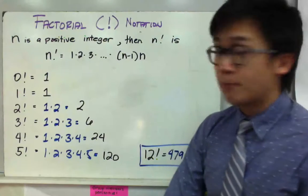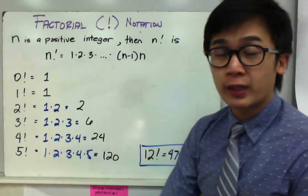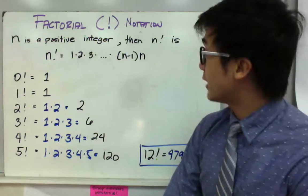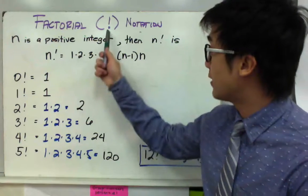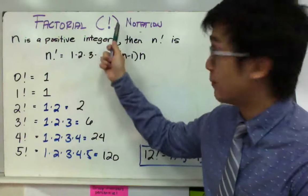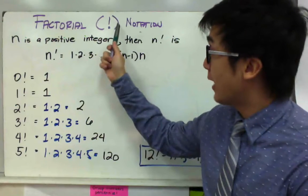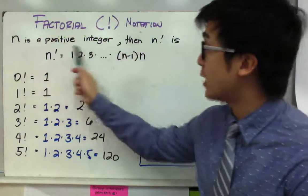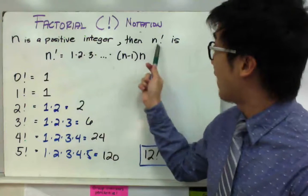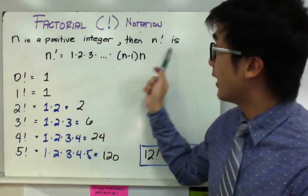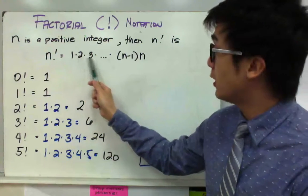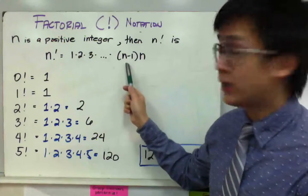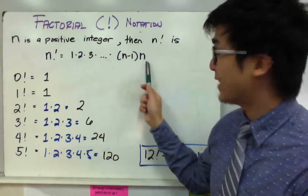For this next example, we're going to be working with factorial. Factorial notation is given by this mathematical notation — the exclamation point — and it's basically telling you that if n is a positive integer, then n factorial is equal to 1 times 2 times 3, all the way through n minus 1 times n.